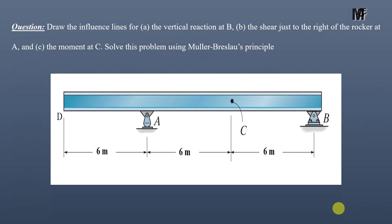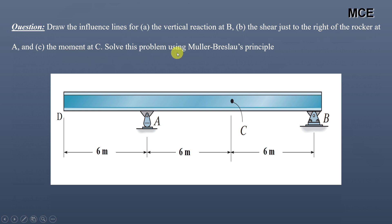Hello and welcome back to the Master of Civil Engineering. In this video you will learn how to draw the influence lines for a beam using the Müller-Breslau principle. These are also called the qualitative influence lines. The question requires us to draw the influence line for the vertical reaction at B, shear just to the right of the rocker joint at A, and the moment at C, using the Müller-Breslau principle.